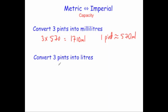The next question says convert three pints into liters. We know that three pints is 1710 milliliters, and since there are 1000 milliliters in a liter, you divide by 1000 to get 1.71 liters.